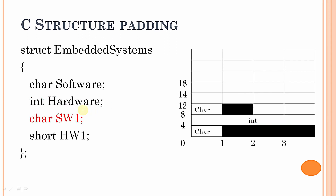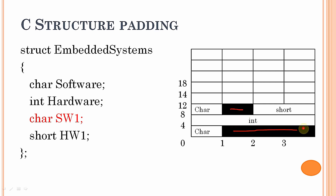The third element, char sw1, is placed at byte 8. The fourth element, short hw1, must align to a boundary of 0, 2, 4, 6, 8, 10, etc., so byte 9 is padded and short hw1 starts at byte 10, occupying bytes 10 and 11. In total, we have 12 bytes for the structure, with 3 bytes wasted due to padding.